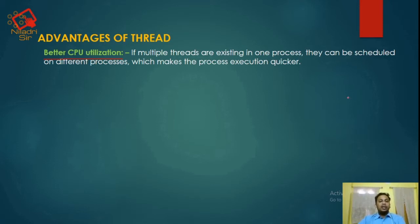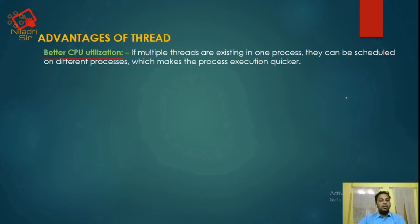As a process consists of multiple threads, they can work simultaneously in parallel. So CPU utilization is much faster and all processes execute faster.